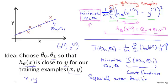There are other cost functions that will work pretty well, but the squared error cost function is probably the most commonly used one for regression problems. Later in this class, we'll talk about alternative cost functions as well. But this choice that we just had should be a pretty reasonable thing to try for most linear regression problems.